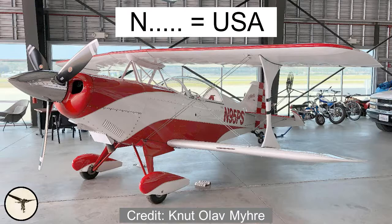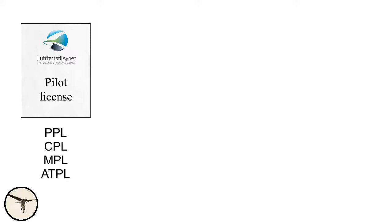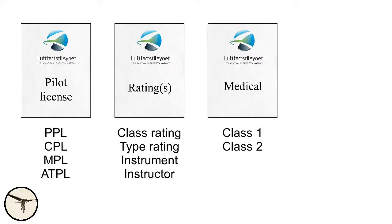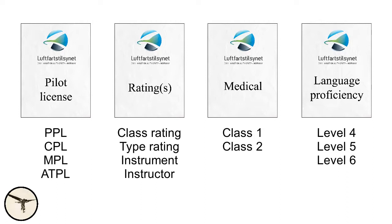In some countries a license is valid for 5 years, in others 10 years, and in EASA member states the license is valid for life. But in order to use your license, you need a valid class rating or type rating, a valid instrument rating if you want to fly IFR, and a valid instructor rating if you want to instruct. All ratings are valid for a limited period of time — for example, my type rating and instrument rating are valid for 12 months and are revalidated with a proficiency check. You also need a valid medical, with validity depending on the class of medical, the type of flight operation, and the age of the pilot. Finally, you need a valid language proficiency: level 4 is valid for 3 years, level 5 for 6 years, and level 6 for life.